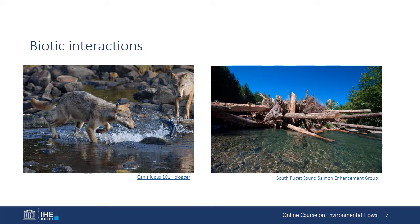Variable flow also influences interactions among species in the system. The photo on the right shows large woody debris washed into the river during a large flood event — this debris becomes an important part of the river's structure, influencing hydraulics and geomorphology and providing shelter and habitat to riverine species. As the organic matter slowly decomposes, it also releases energy transported downstream. The image on the left shows a large migrating salmon exposed to predators due to low flows — it was a good day for the young Canadian wolves, but a bad day for the salmon.